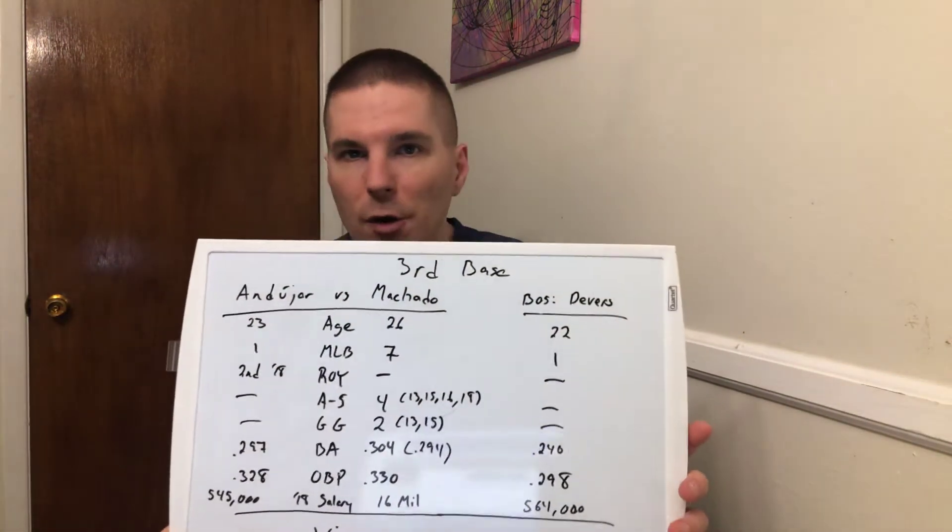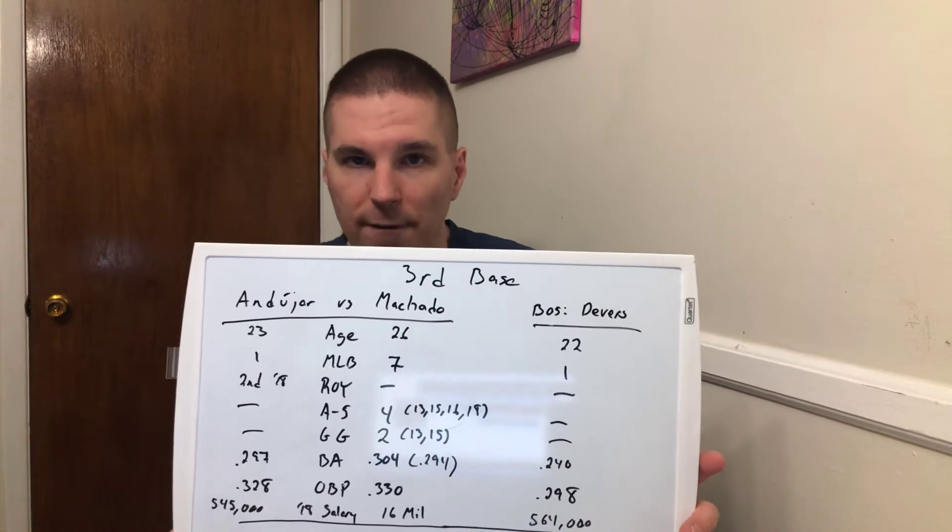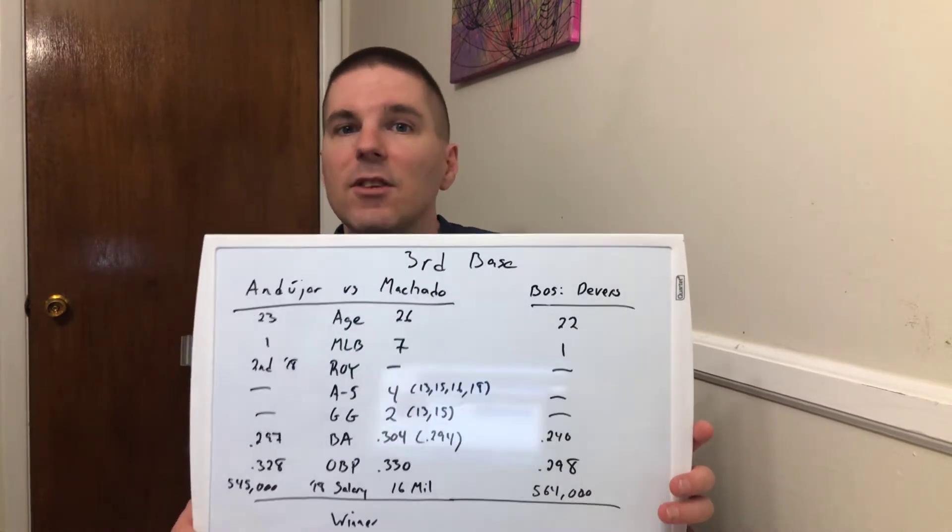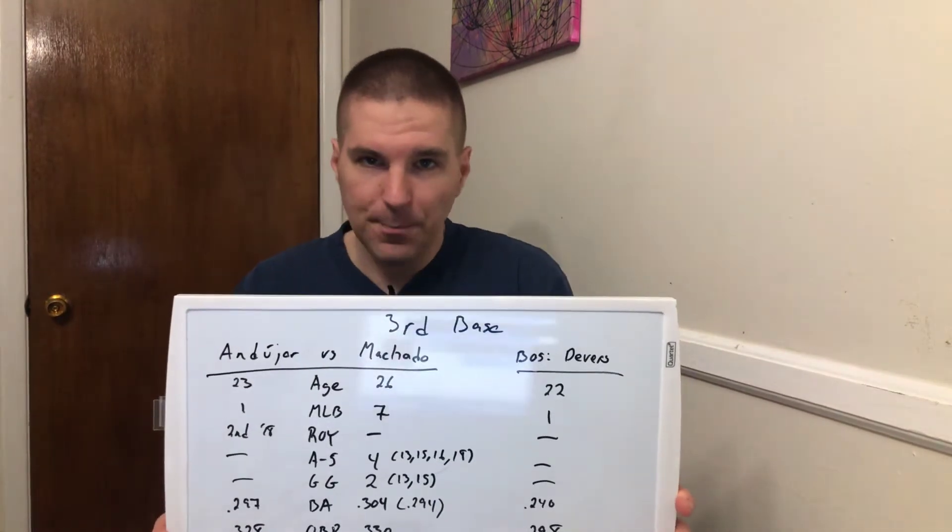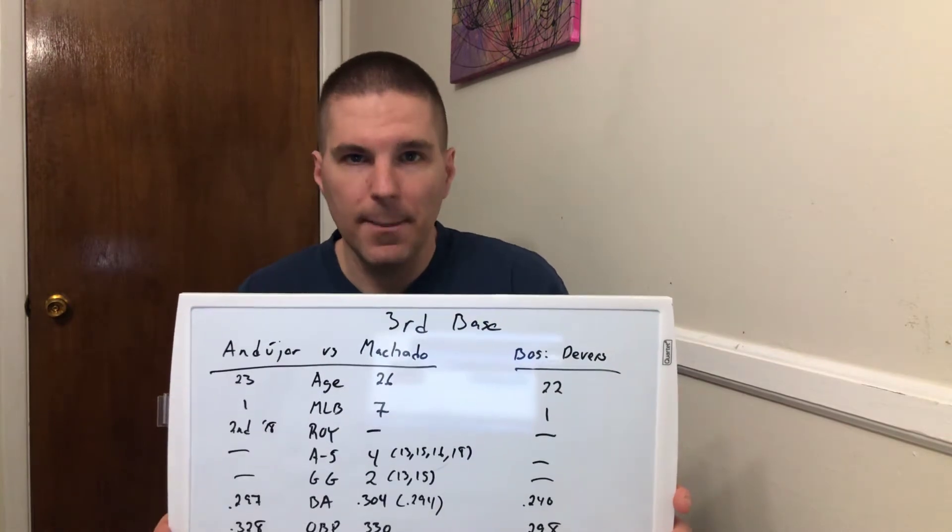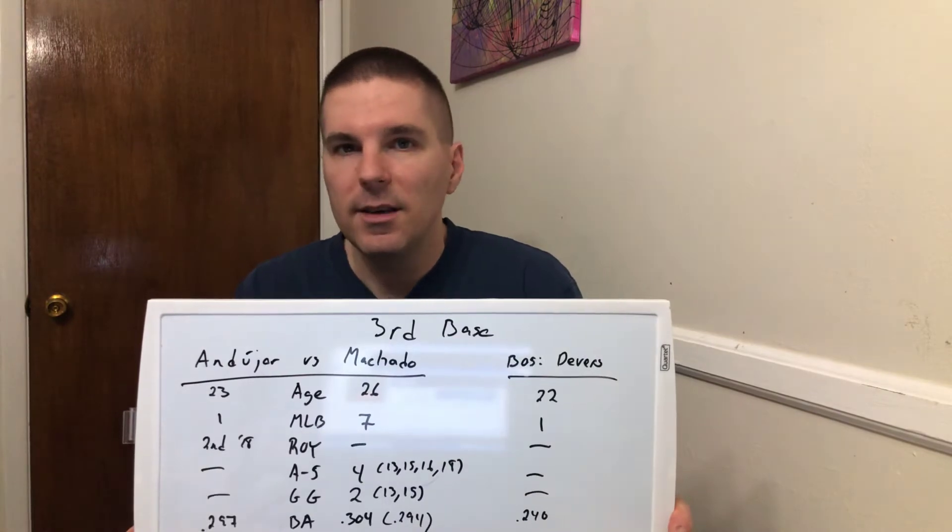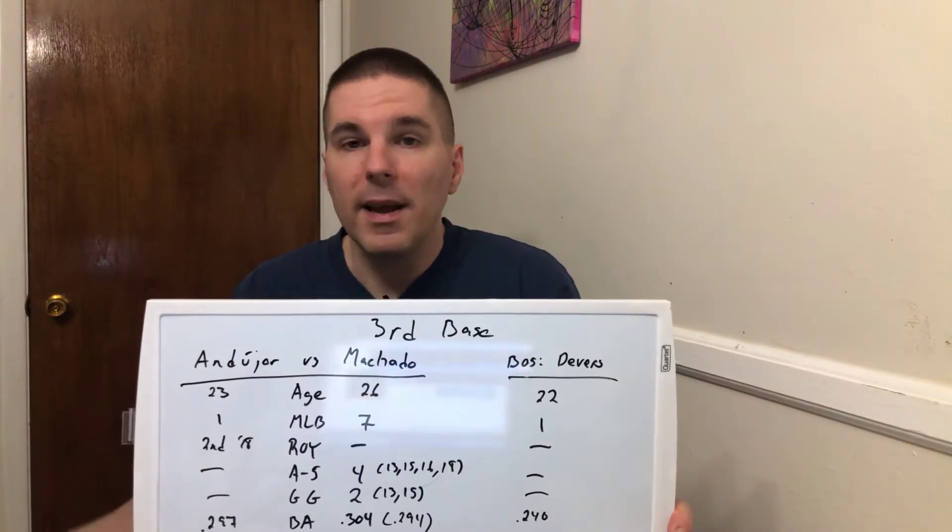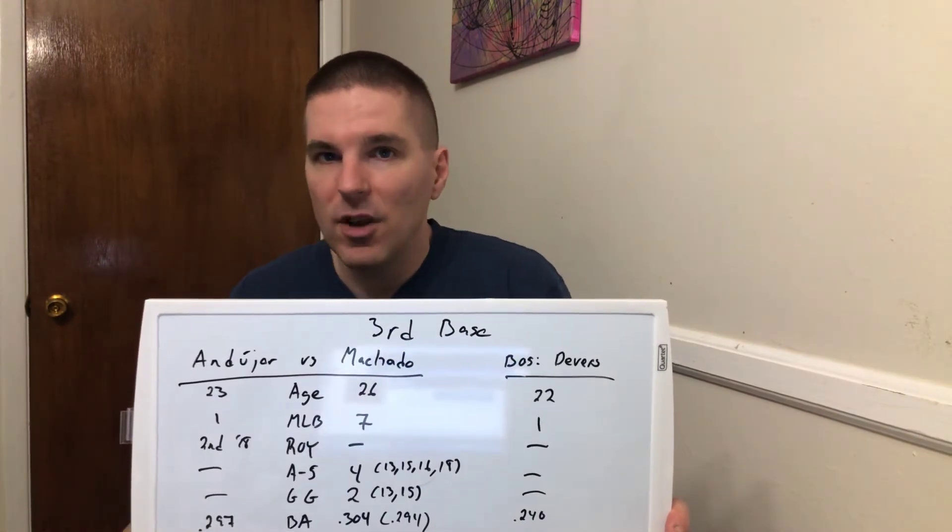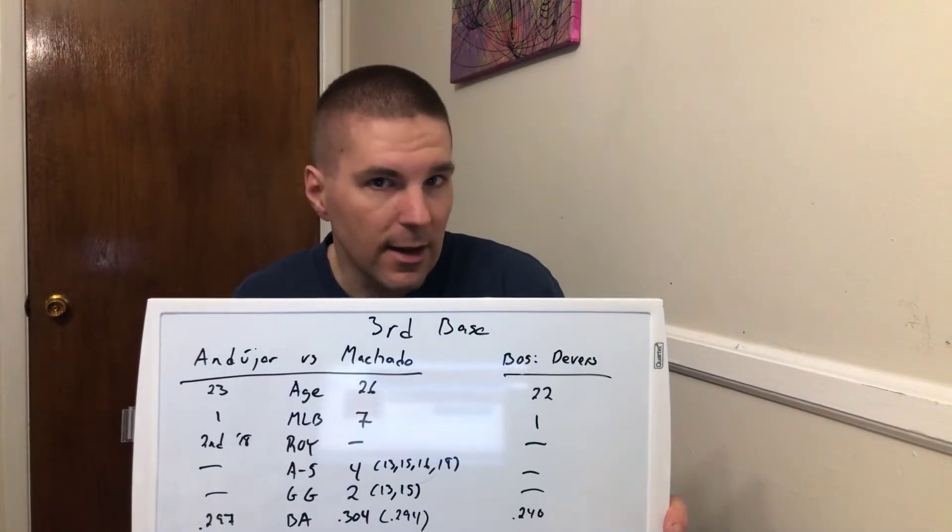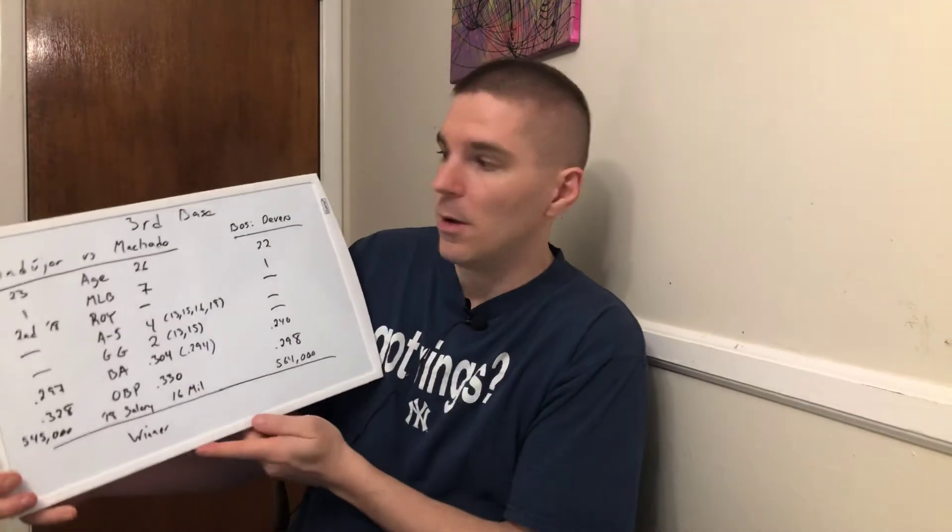In today's video, we are going to compare our current third baseman, Miguel Andujar, versus Manny Machado. And as fan requested, we are also going to compare him to Boston's Rafael Devers. Interestingly enough, 2018 were both Miguel Andujar and Rafael Devers' rookie seasons. How did they stack up? Well, the numbers don't lie.